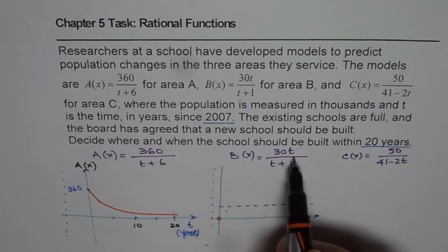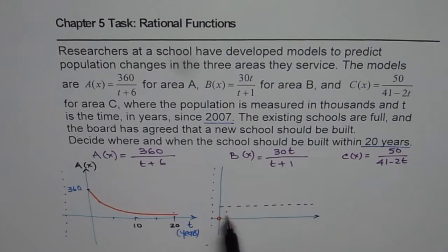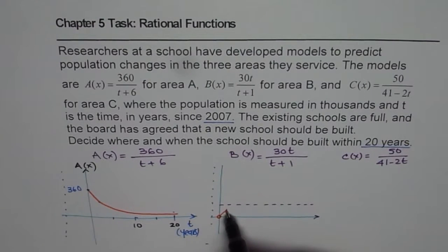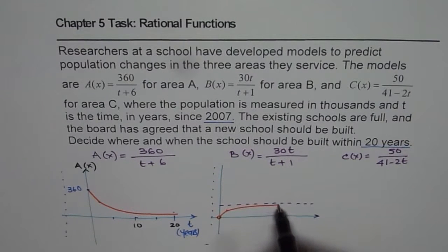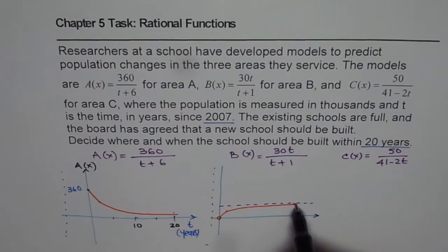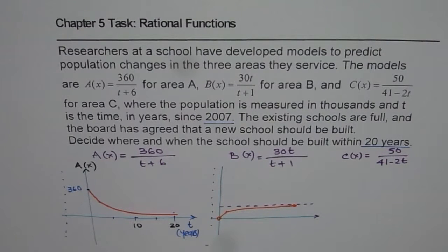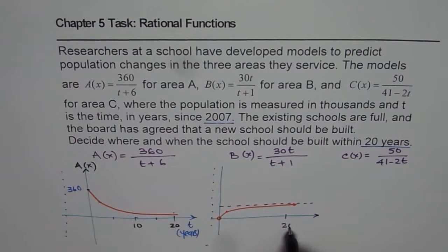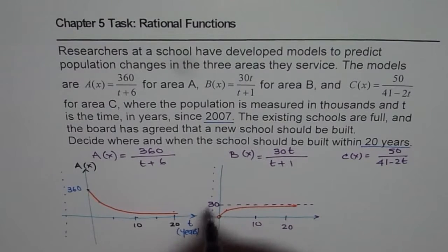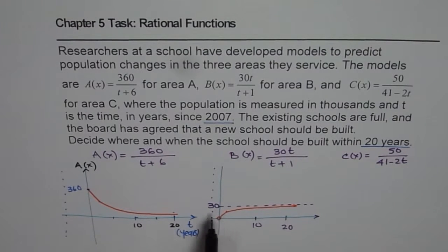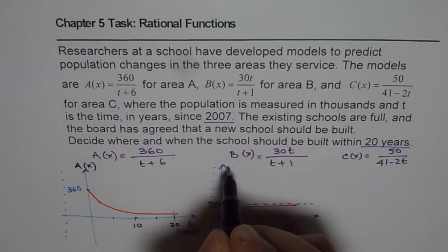And then, as t increases to a large number, we approach the value 30. So this graph will be kind of like this, approaching 30 as the time passes by. So we can say this is 20 for us. In that case, this is 10, and that is the kind of graph where this is 30. All the numbers are in thousands, and that is for B(x).